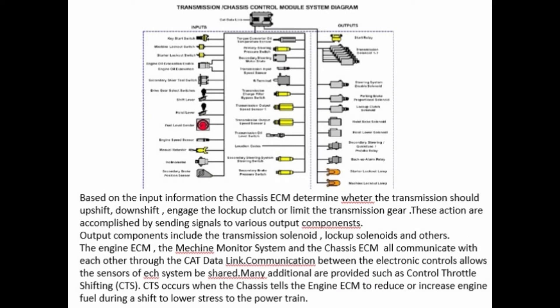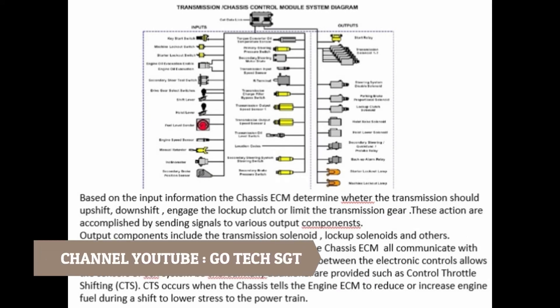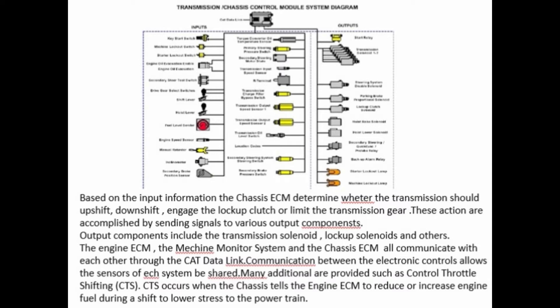Based on the input information, the chassis ECM determines whether the transmission should upshift, downshift, engage the lock-up clutch, or limit the transmission gear. These actions are accomplished by sending signals to various output components including the transmission solenoids, lock-up solenoids, and others. The engine ECM, the machine monitor system, and the chassis ECM all communicate with each other through the CAT data link. Communication between the electronic controls allows the sensors of each system to be shared. Many additional features are provided, such as controlled throttle shifting.